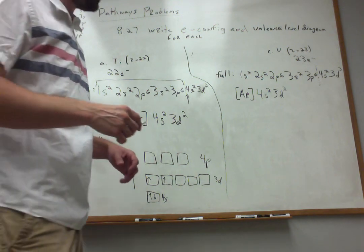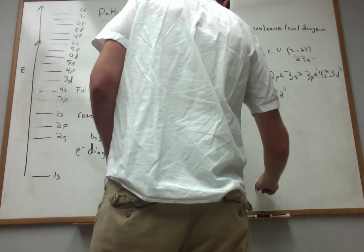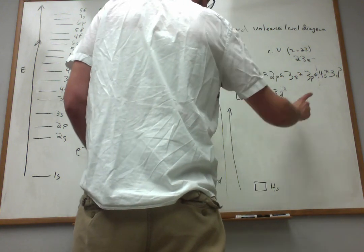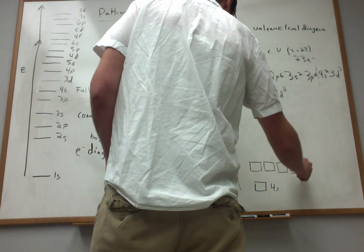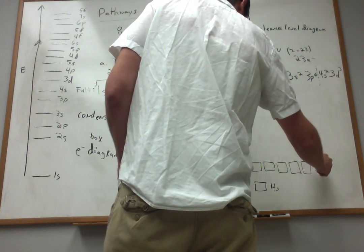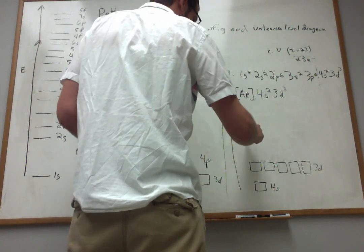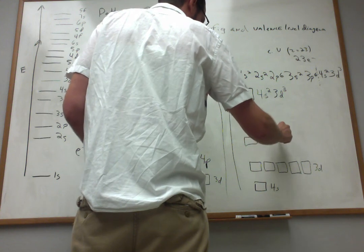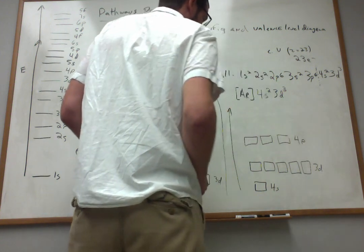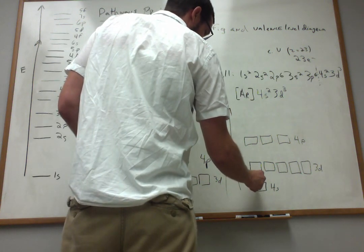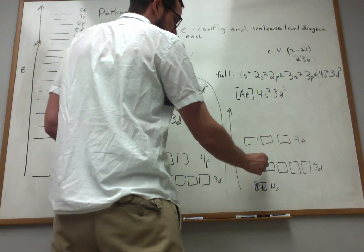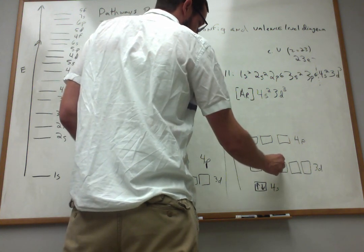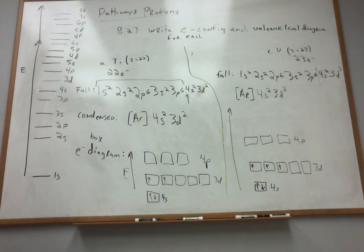For the box diagram of vanadium, I draw boxes for 4s at the bottom, then five boxes for 3d, and optionally 4p. The 4s has two electrons — up arrow and down arrow. For 3d, I have three electrons: I place one in each of three separate d orbitals, leaving them unpaired in accordance with Hund's rule. I was never forced to pair, so all three remain unpaired. That's the electron configuration box diagram for vanadium.